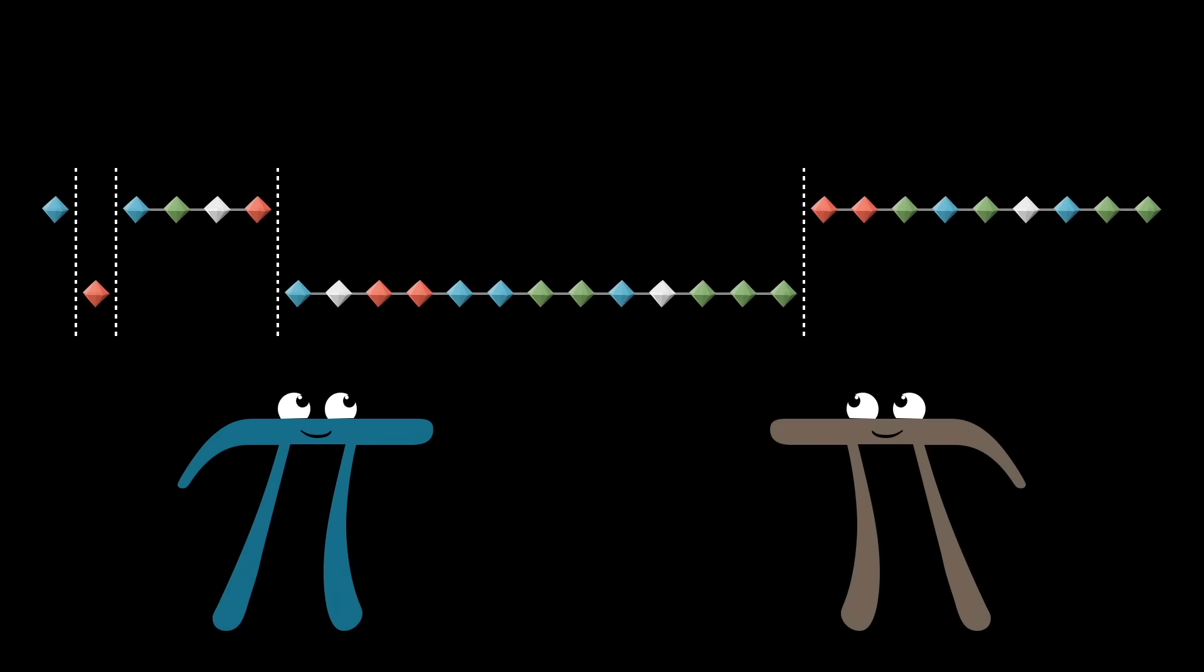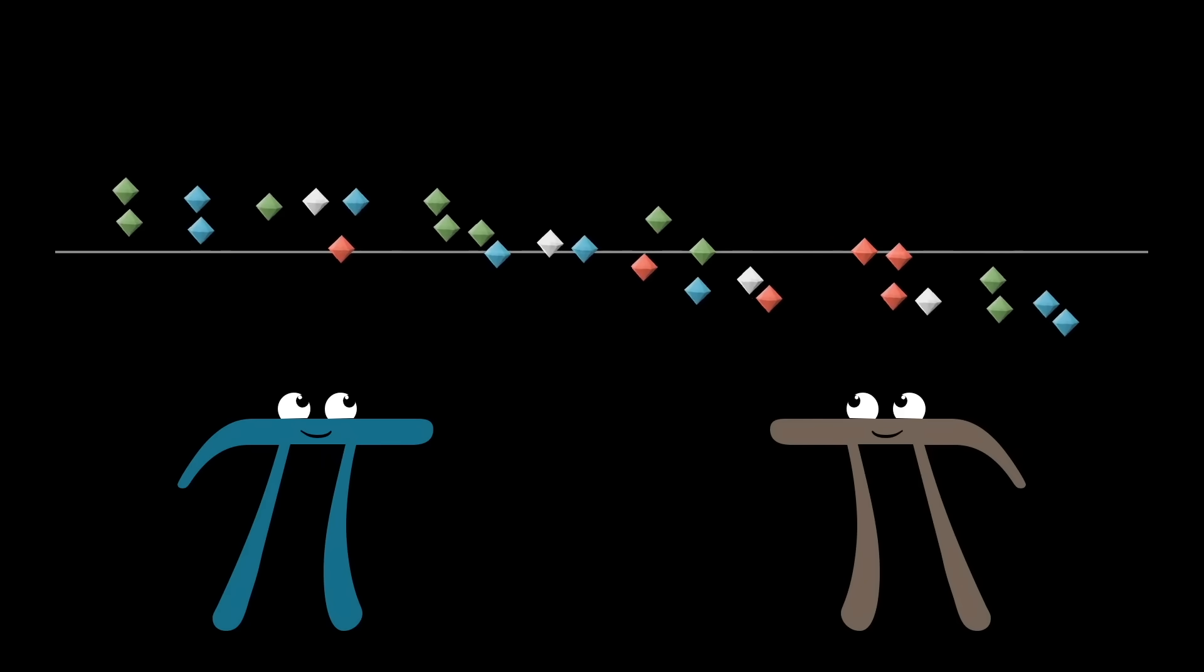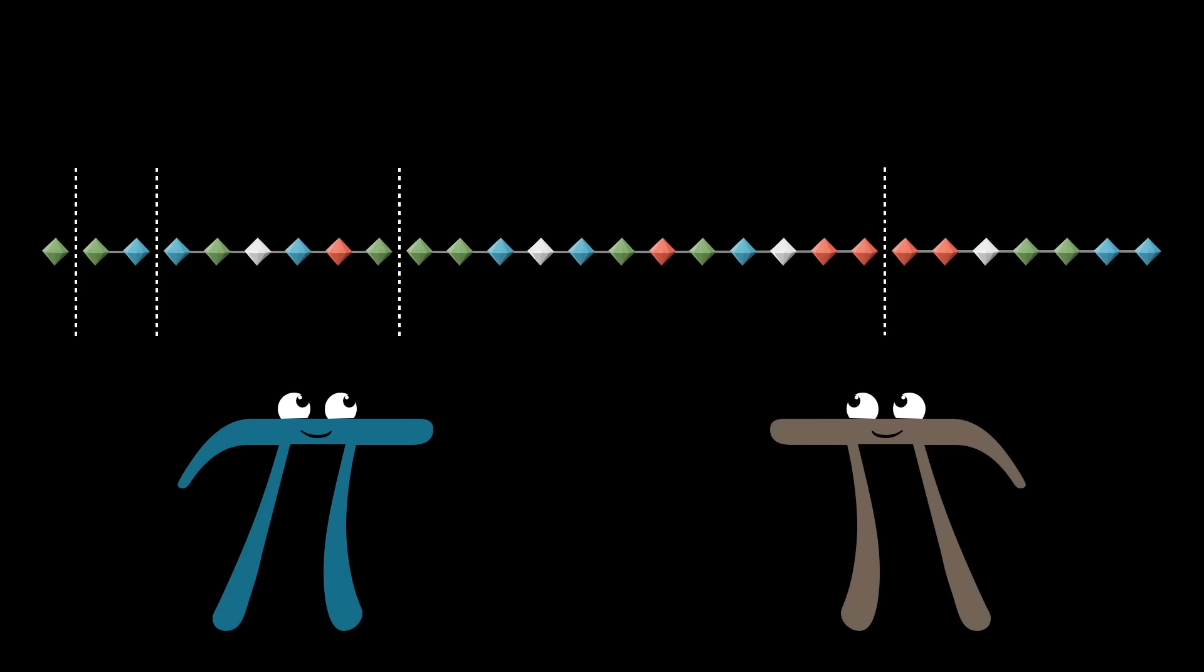Independent from the usefulness, though, it certainly does make for a good puzzle. Can you always find a fair division using only as many cuts as there are types of jewels?